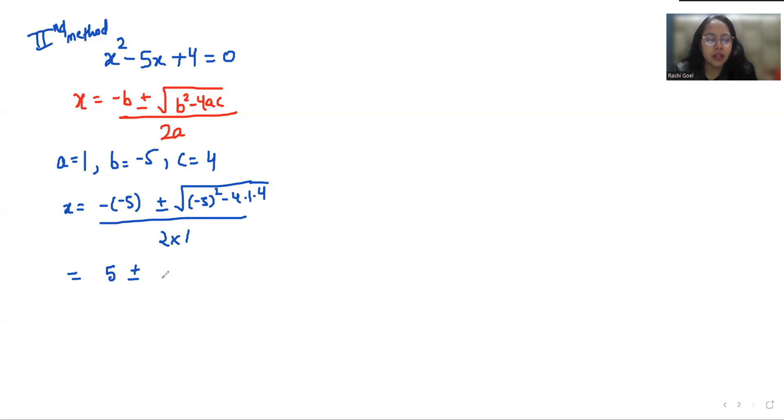So 5 plus minus under root 25 minus 16 by 2. So 5 plus minus square root of 9 is 3 by 2.